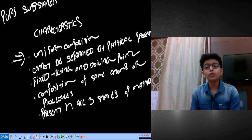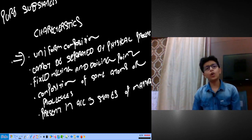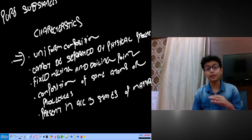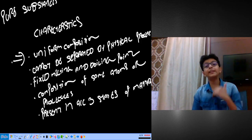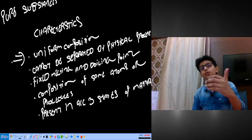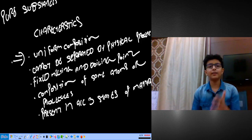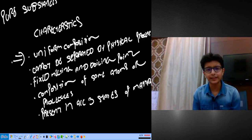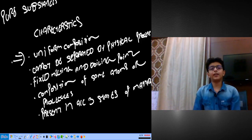The second characteristic: a pure substance cannot be separated by any physical process. Any substance can't be separated by any physical process. We need a chemical method — such as nuclear fusion or fission processes. For example, water: if it is a compound, it can be separated by electrolysis. But we cannot break elements this way.